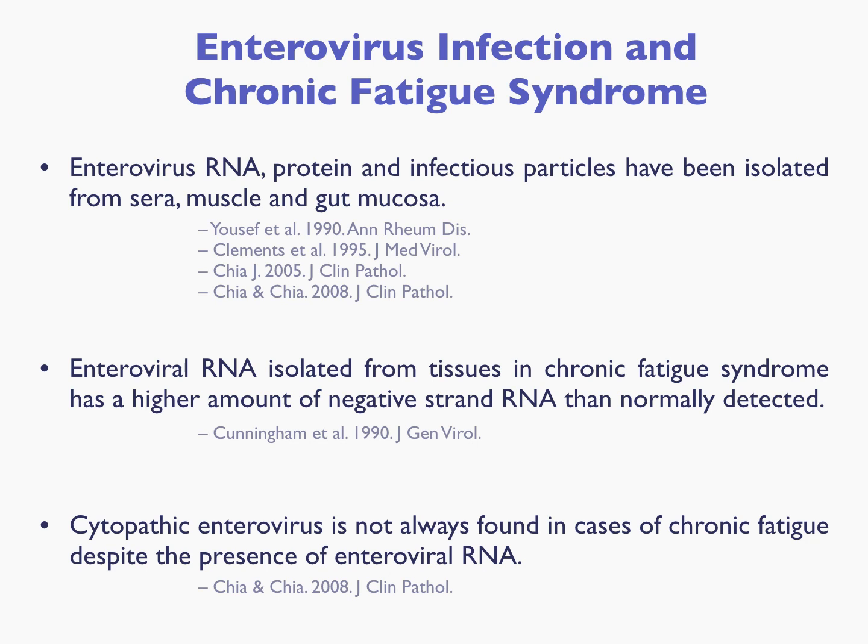I will give a short recap on some of the things that are known about enterovirus infection and chronic fatigue. There has been enteroviral RNA protein in infectious particles isolated from cases of chronic fatigue, and it shares the characteristic seen in persistent enterovirus infections that these positive strand RNA genomes normally have much more of the genomic RNA — which also serves as the mRNA — than the negative antigenome. But in cases of chronic fatigue isolation of enterovirus, they detect negative strand RNA at a much greater level.